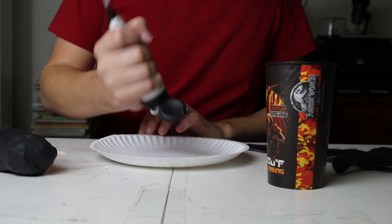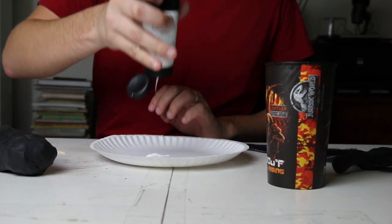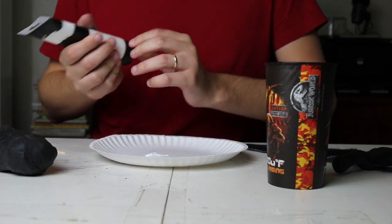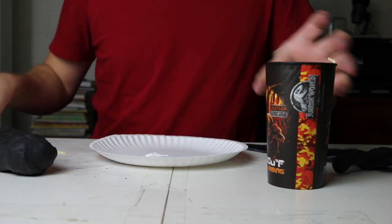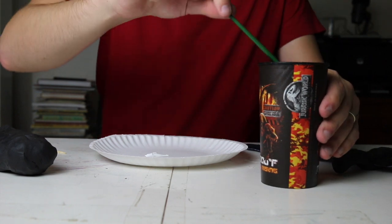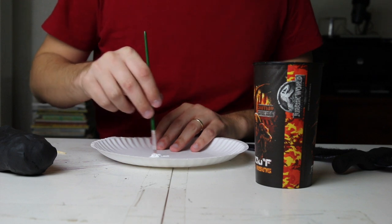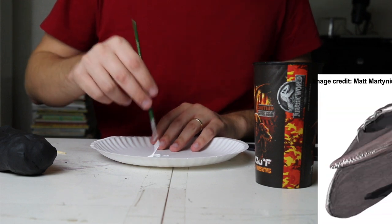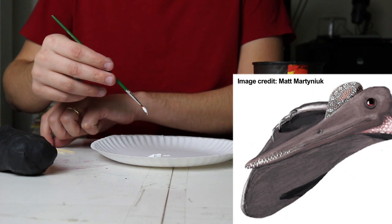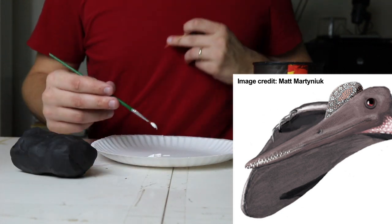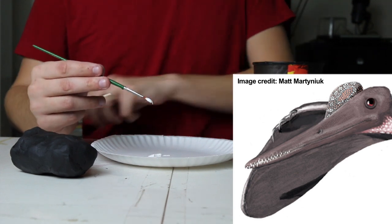Next I am going to get to work on the beak. The beak is going to be made out of air drying clay, but since pterodactyls had teeth I will need to have the teeth ready to insert into the beak before it actually dries, so I'm going to get to work on the teeth first.